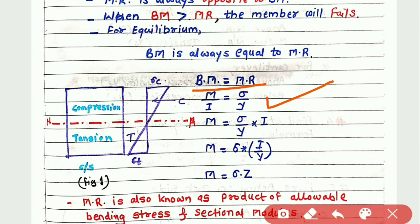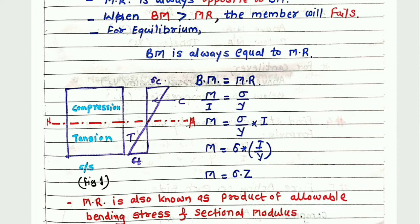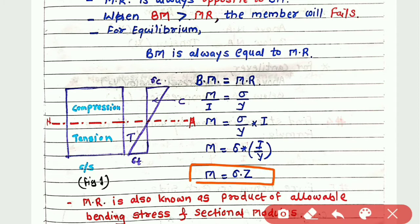This is the flexural formula we have already learned: M upon I is equal to sigma upon Y. Here M is the moment of resistance, sigma is the stress, Y is the maximum distance of the extreme fibre from the neutral axis, and I is the moment of inertia of the section. From this, M equals sigma into I by Y. Since I by Y equals sectional modulus Z, we get M equals sigma into Z. This is also known as the product of allowable bending stress and sectional modulus.